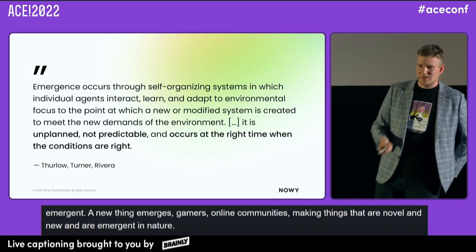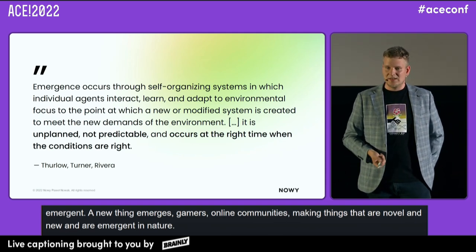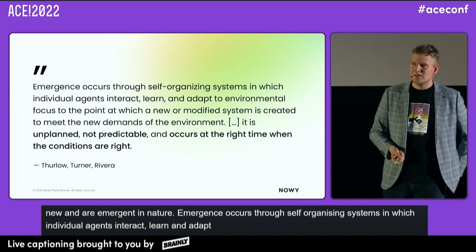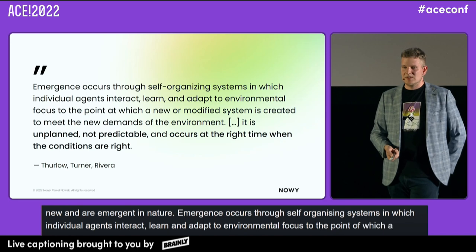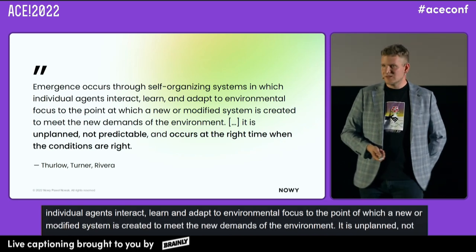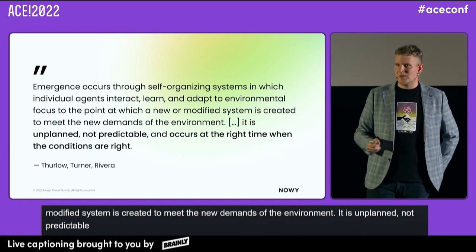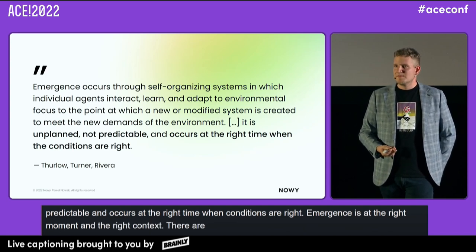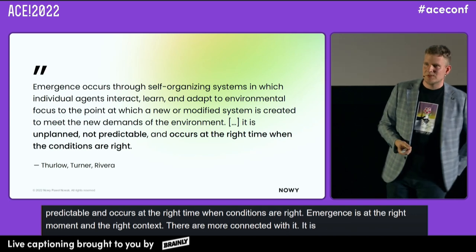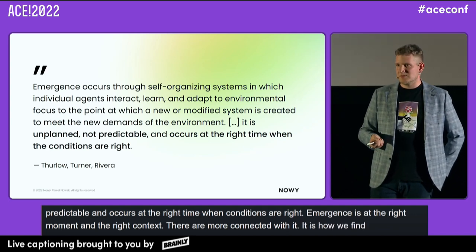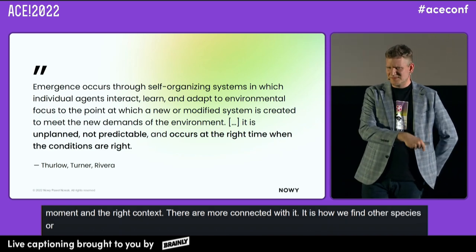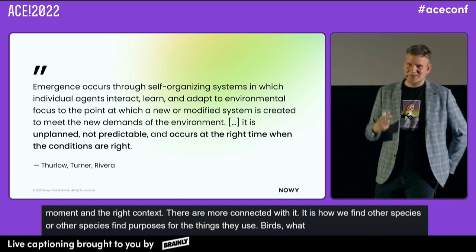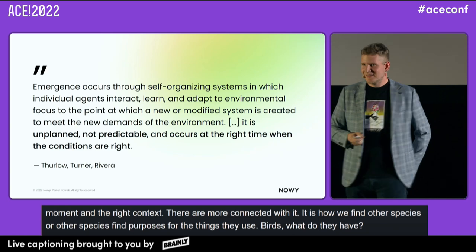Emergence occurs through self-organizing systems in which individual agents interact, learn, and adapt to environmental focus — to the point at which a new or modified system is created to meet the new demands of the environment. It is unplanned, not predictable, and occurs at the right time when conditions are right. There's also exaptation — how we as a species find new purposes for things. For example, feathers: they evolved to keep birds warm, and then evolved into wings.